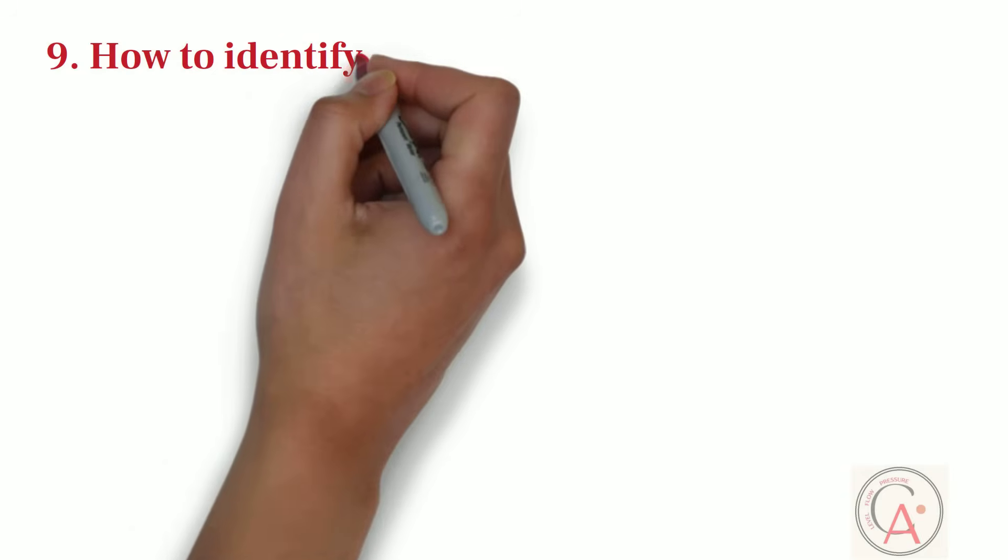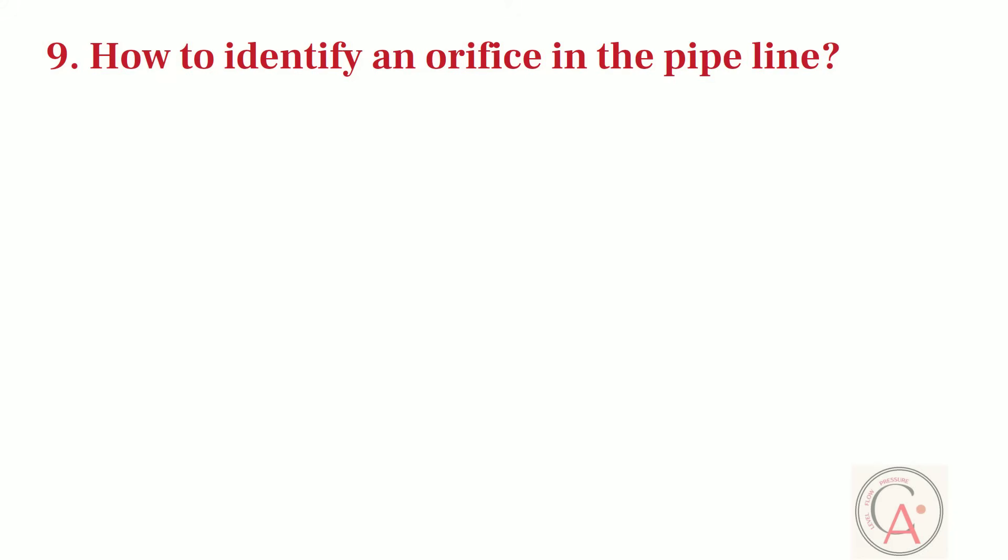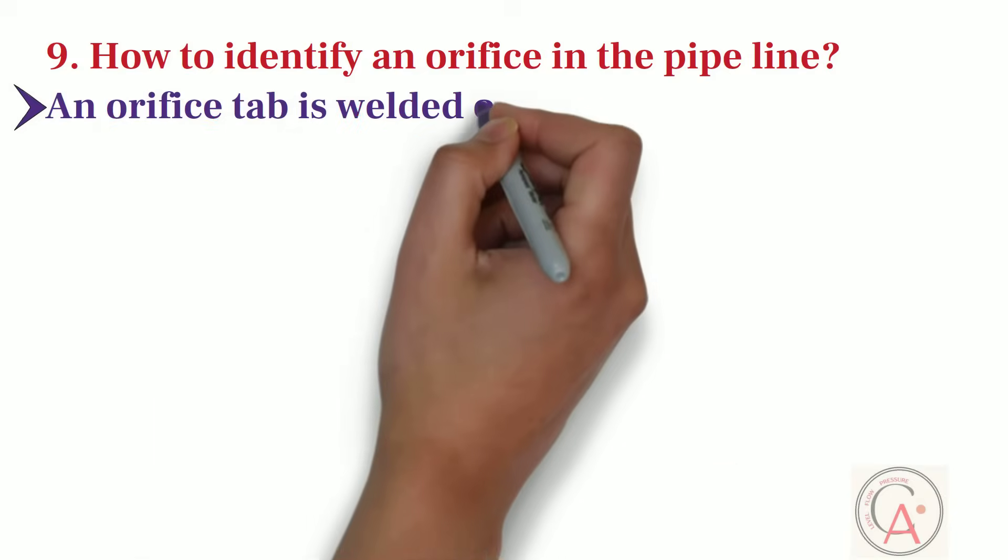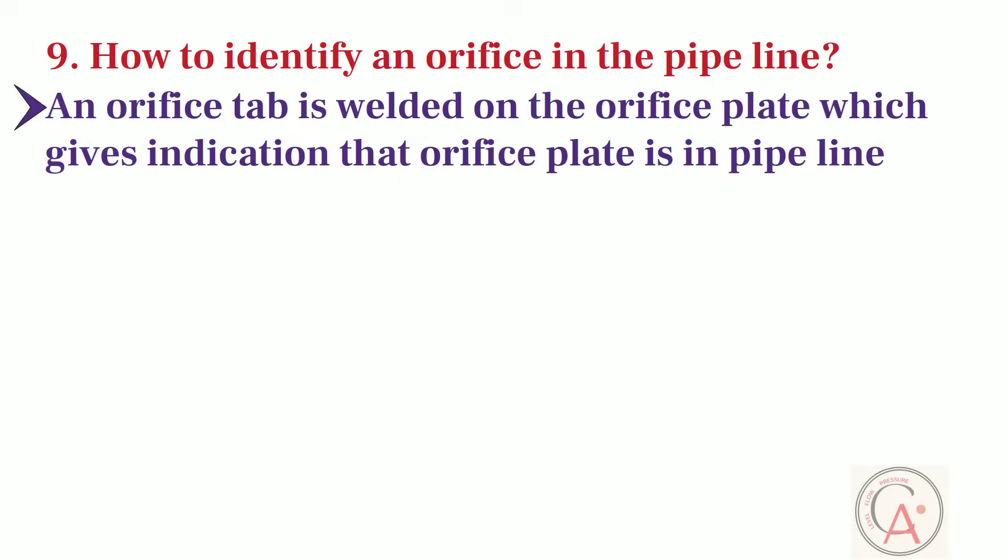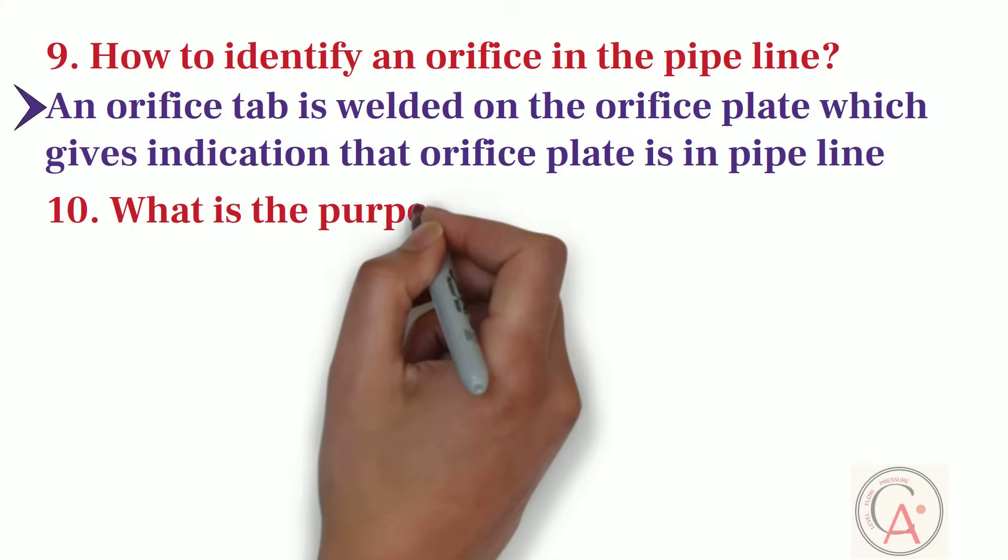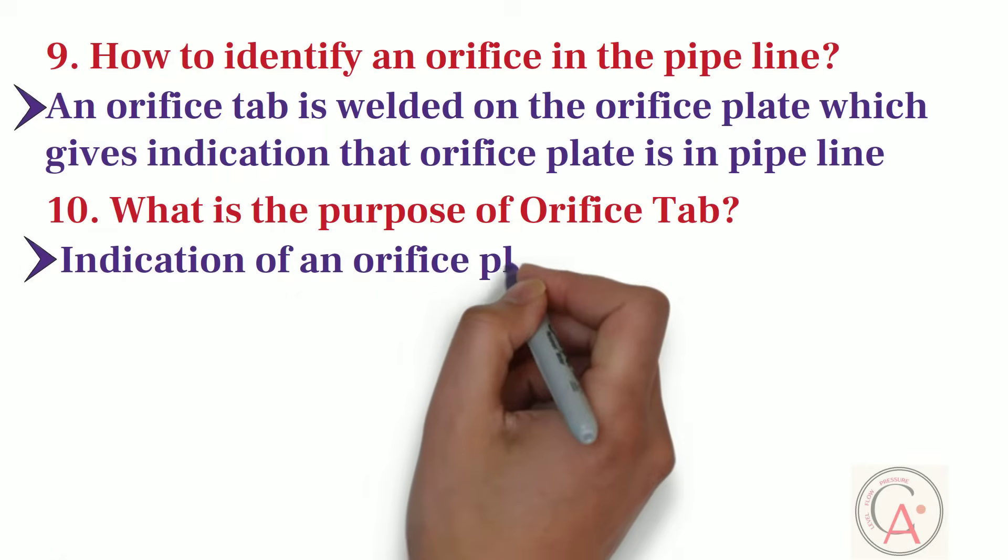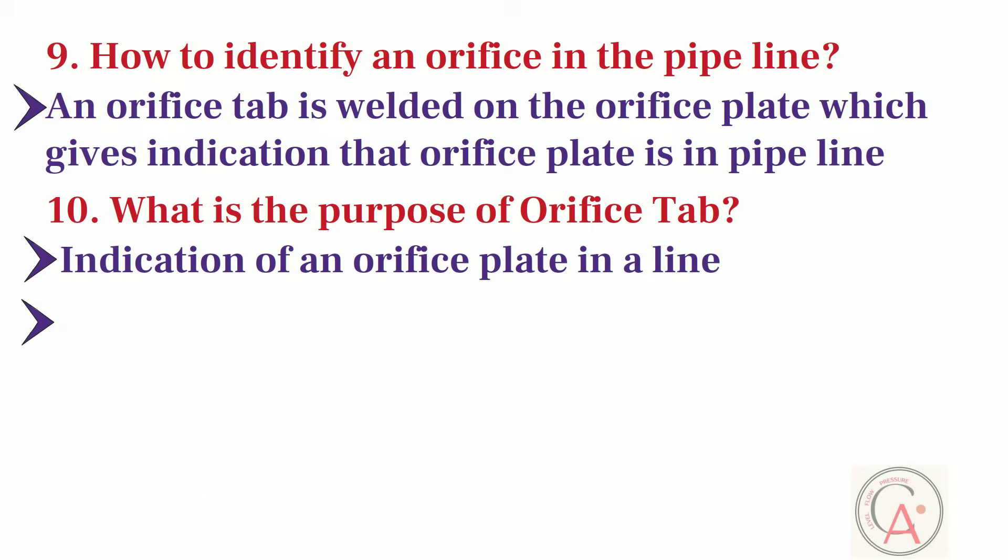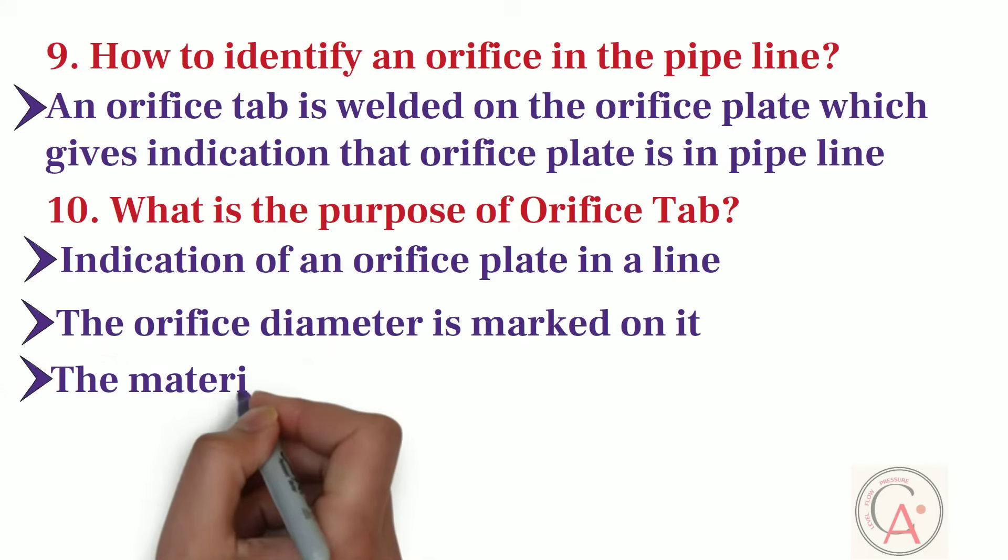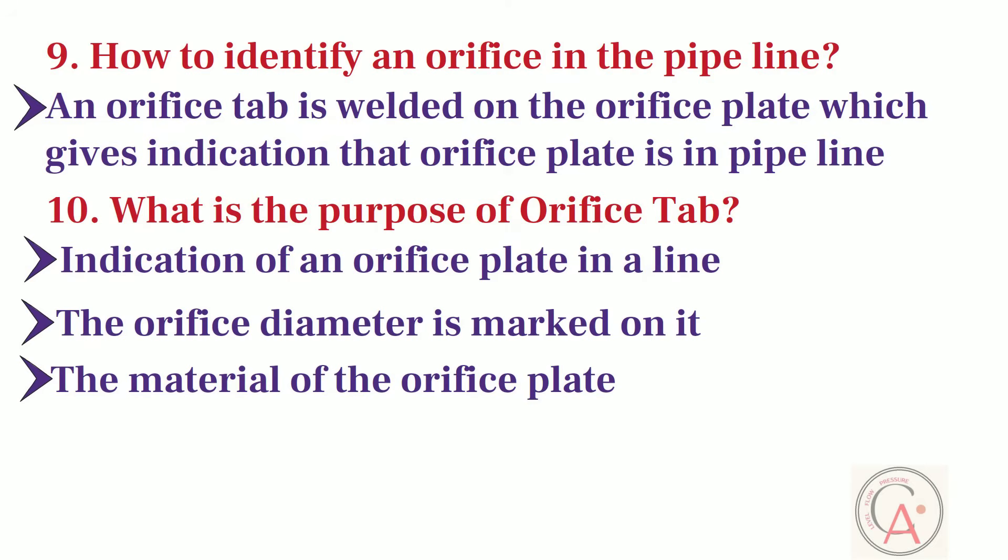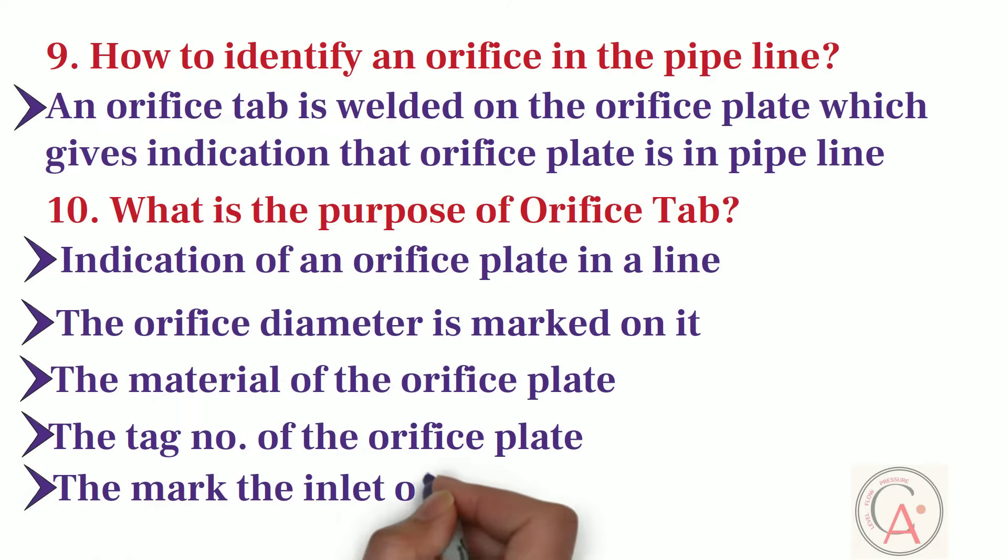Ninth question is, how to identify an orifice in the pipeline? An orifice tab is welded on the orifice plate which extends outer of the line, which gives indication that orifice plate is in the pipeline. Tenth question is, what is the purpose of orifice tab? There are mainly five different applications of orifice tab. First of all, orifice tab gives indication of an orifice plate in a line. Orifice tab is also useful because it has the information about the orifice diameter. In addition to this, it also gives the useful information about the material of orifice plate. Furthermore, the tag number of the orifice plate is also mentioned on it. Last but not least, orifice tab has mark on it, which gives indication of inlet of the orifice.